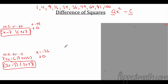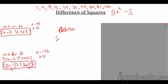Here's the Difference of Squares trick: you absolutely don't need it — you can multiply out and add a zero middle term — but it makes your life easier. The trick: take the square root of the first term, put it in the front of both factors; take the square root of the second term, put it in the back of both factors; one has a minus, the other has a plus.